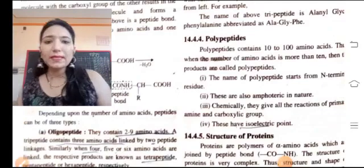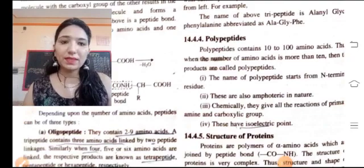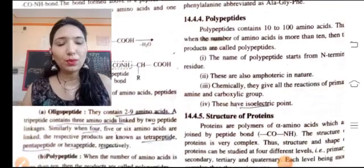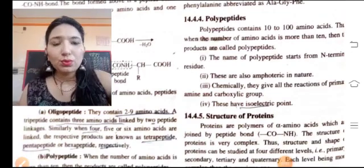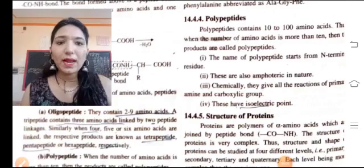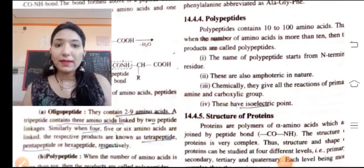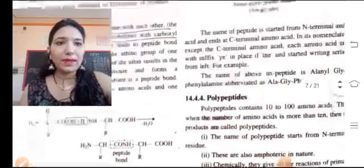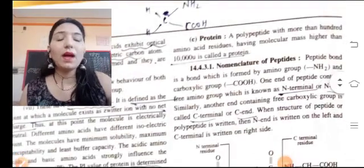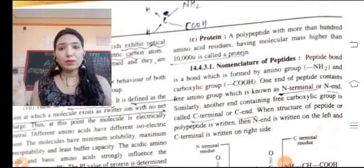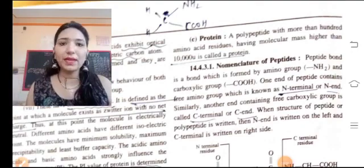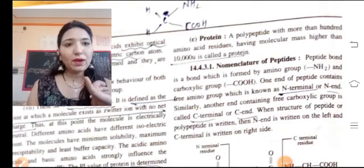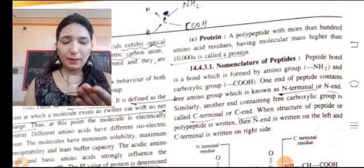Depending on the number of amino acids, peptides can be of three types. Number one, oligopeptides. When you combine amino acids, one or two of them will not become protein. For proteins, there are a lot of units of amino acid needed.